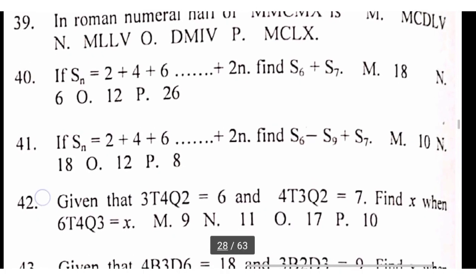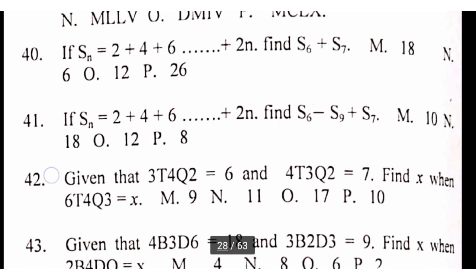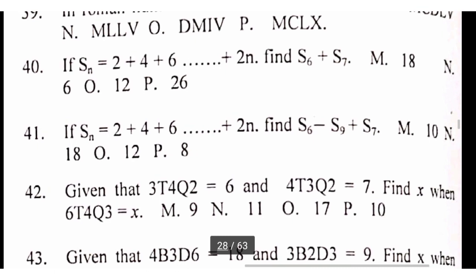The next question. 41. If Sn is equals to 2 plus 4 plus 6 and 2n, find S6 minus S9 plus S7. So, the same thing here. He's moving in 2s.